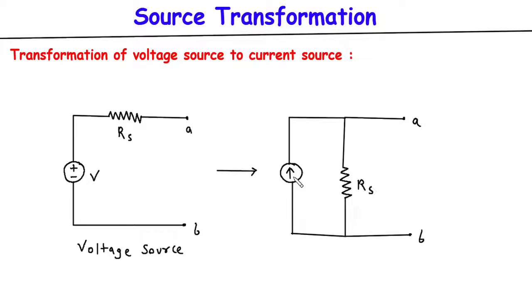We can find the value of this current source by using Ohm's law. So it is I equals V upon Rs. So this will be the value of this current source.